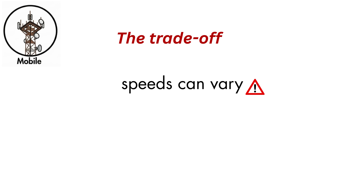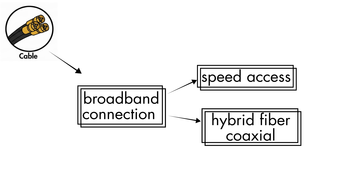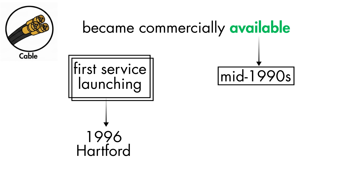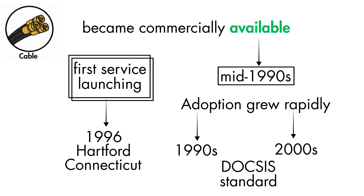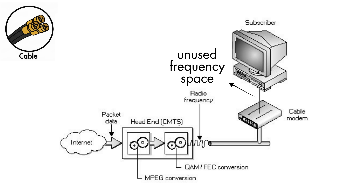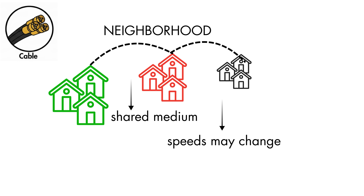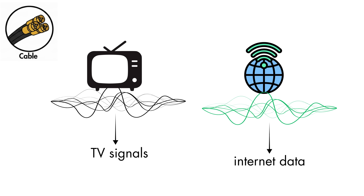Cable internet is a broadband connection that delivers high-speed access through the same hybrid fiber-coaxial cables used for cable TV. It first became commercially available in the mid-1990s, with the first service launching in 1996 in Hartford, Connecticut. Adoption grew rapidly in the late 1990s and early 2000s as the DOCSIS standard matured. The technology uses the unused frequency space on coaxial TV cables. A cable modem in the home connects to the provider through the coaxial line, and all data travels to a CMTS at the cable operator's head end. TV signals and internet data use different frequency bands, allowing both to run on a single cable without interference.